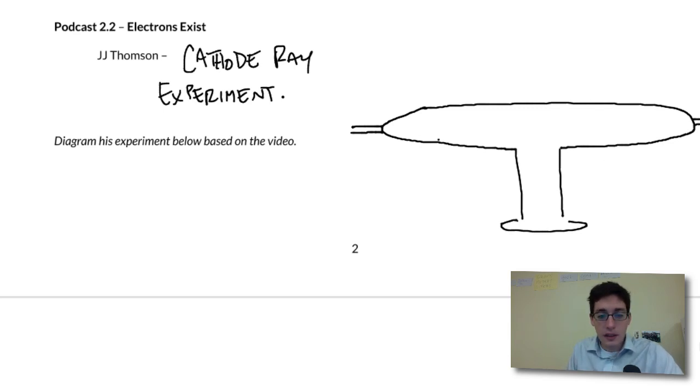He's got this cathode tube - it's a sealed glass tube - and he had a beam of electrons that was moving across this, like a laser.